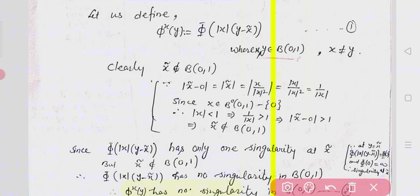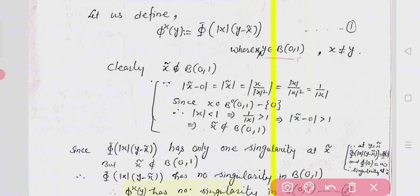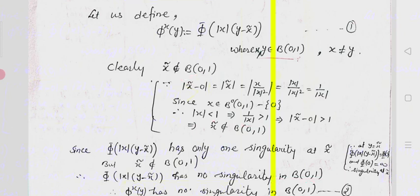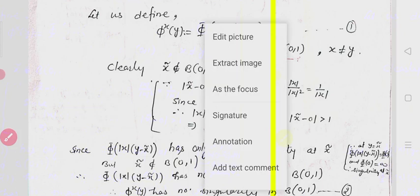We can prove that x̃ does not belong to B(0,1). Indeed, |x̃ − 0| = |x̃| = |x/|x|²| = |x|/|x|² = 1/|x|. Since x belongs to the open unit ball (non-zero), |x| < 1, so 1/|x| > 1. Therefore |x̃| > 1, which means x̃ does not belong to the unit ball.